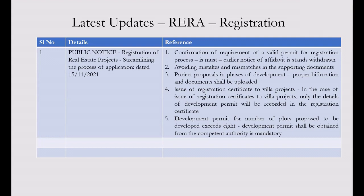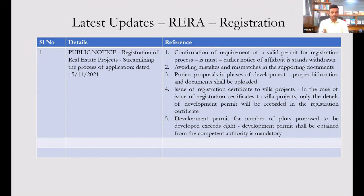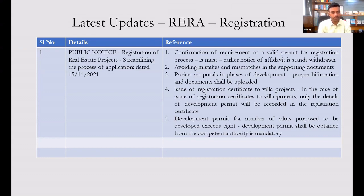Regarding villa project registrations: in streamlining project details, for plots on which villas are being developed, the development permit details will be recorded in the registration certificate. Where villas are developed in bits and pieces or stages, the villas under development must be properly marked or demarcated — shaded in a different color — in the application so that the authority can clearly identify which villas are under development. This is more of a procedural requirement.